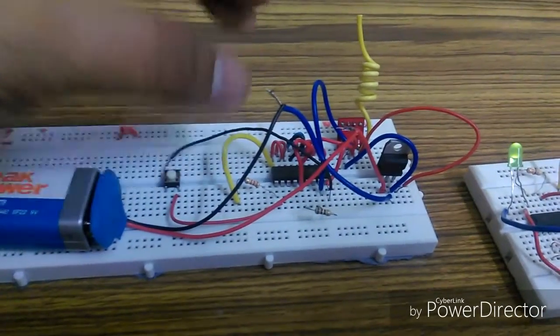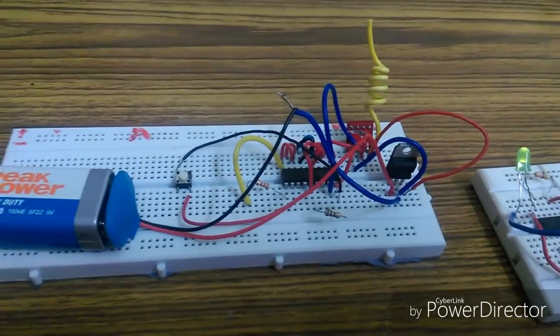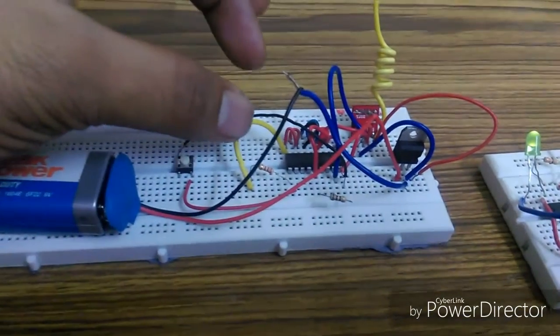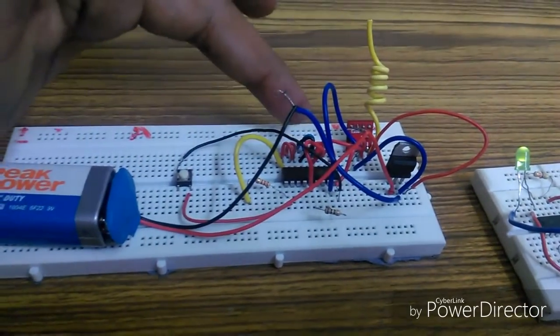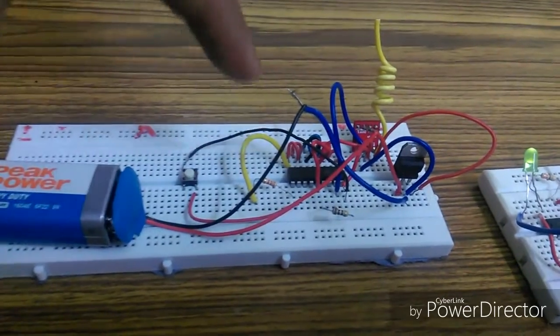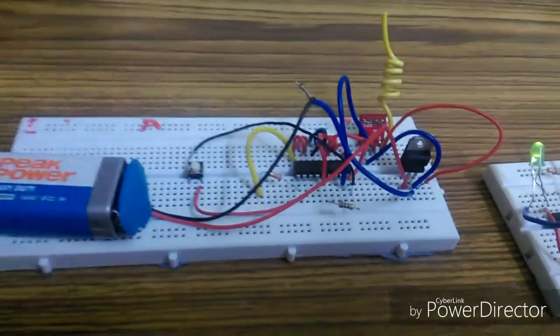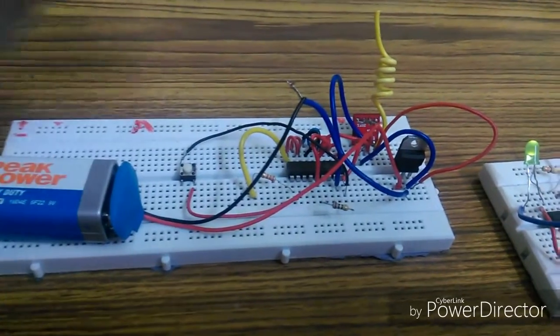But with the help of this IC we can transmit 4-bit data. So this encoder also encodes 8 address bits along with 4 data bits, so there are total 12 bits that are being converted into serial data and then the serial data is being transmitted through this antenna.